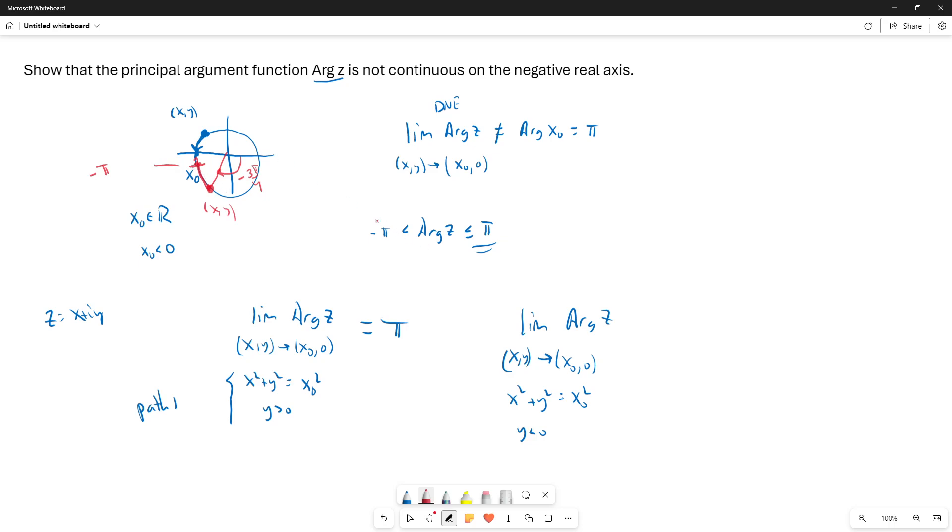Because in the lower half plane, we're going to have negative arguments. So this limit is going to be negative π, certainly not equal to π. So our choice of the path determines the limit, and so the limit as (x,y) goes to (x0, 0), a negative real number, of Arg z is not equal to the Arg of x0, which is π.